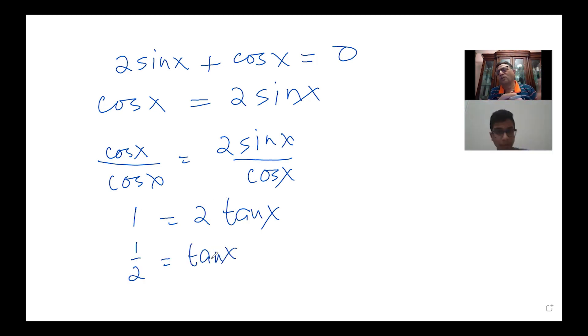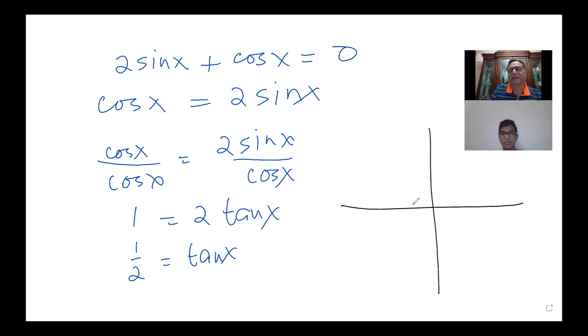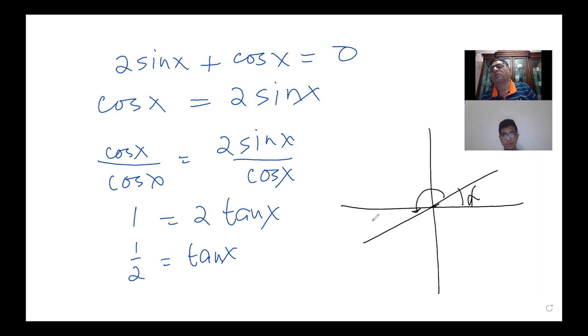We may have to solve the equation a bit to get to that result, but ultimately we use the same method: find the related acute angle α, and the other angle will be 180° plus that angle on the other side. You might have quadratic equations also, and you may have to solve those and then get the answer.